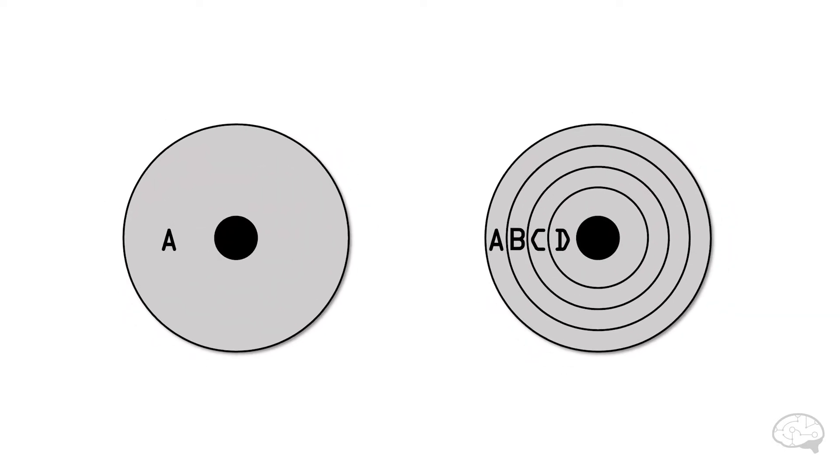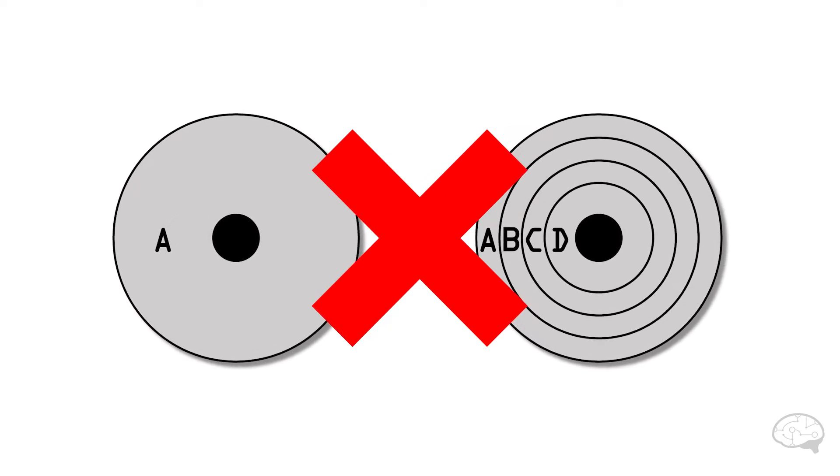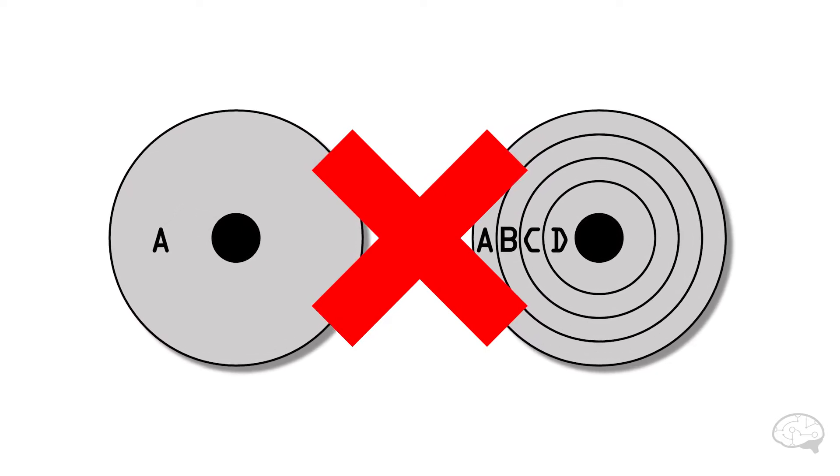However, if you have a BSE detector with only one element, or only rings, this will not work, since we won't be able to get directional shadows from these configurations. However, I'll discuss an alternate method that doesn't require the BSE detector later on in the video.